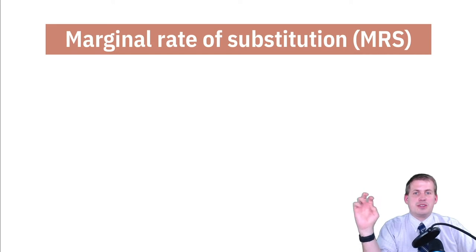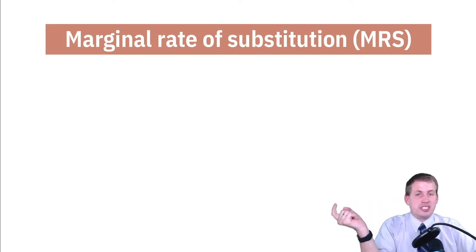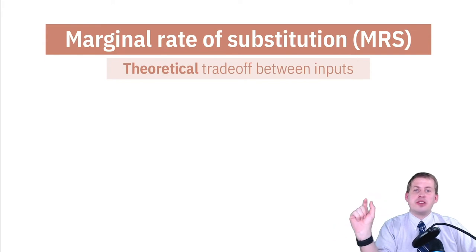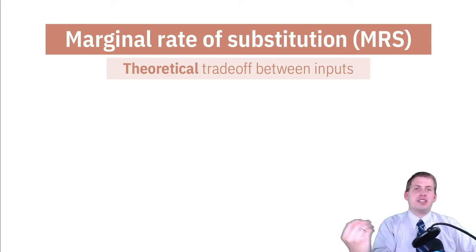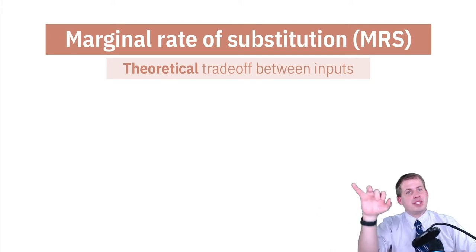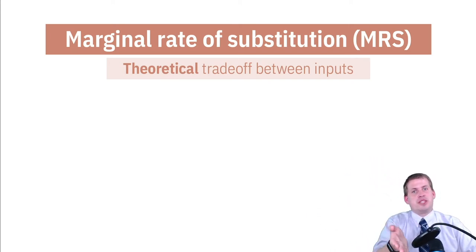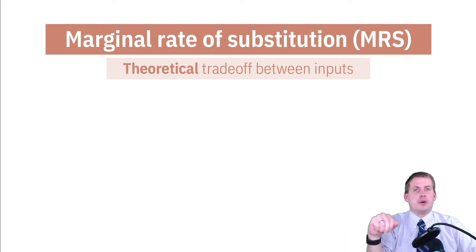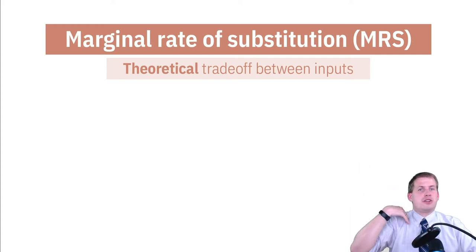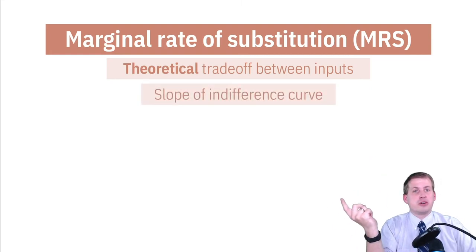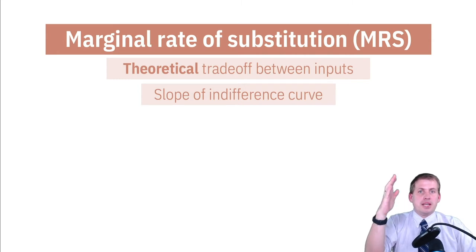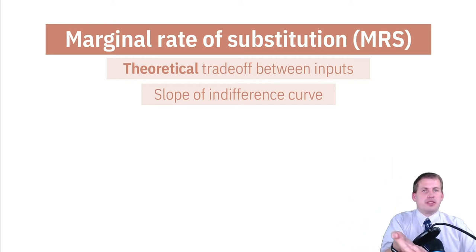We've talked about two marginal things here. The marginal rate of substitution is the slope of the indifference curve — it's this theoretical trade-off between different inputs. It's saying I would be equally happy if I failed this class but had tons of free time, or didn't fail and had less free time. There are all sorts of combinations of free time and grades, or ice cream and pizza, that create the same level of happiness. The slope of that indifference curve is the marginal rate of substitution, and it depends on the derivative, which is why we care about the derivative.